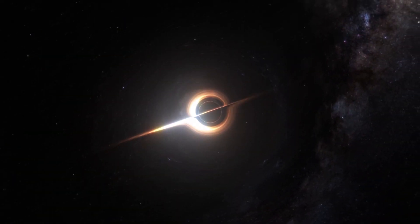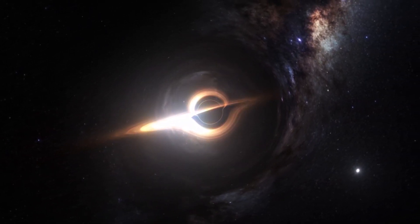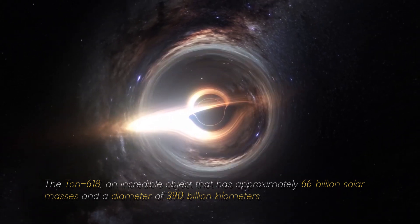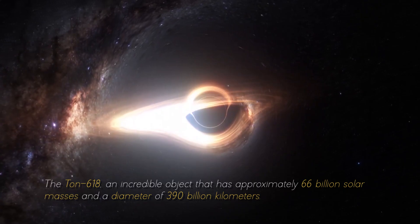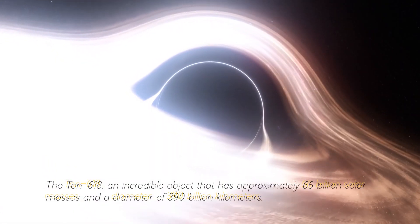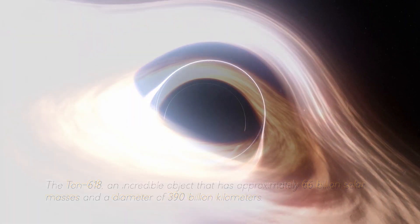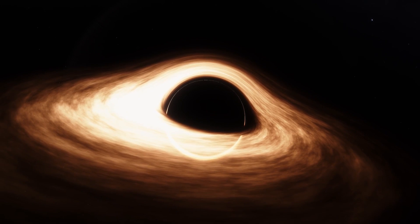Not everything ends here. This star cannot be compared with the most massive black hole in our cosmos, the Ton 618, an incredible object that has approximately 600 billion solar masses and a diameter of 390 billion kilometers. For now, we will stop measuring in kilometers and start measuring in light years.